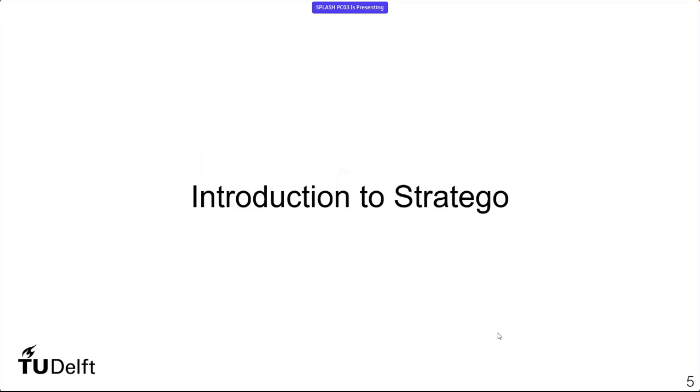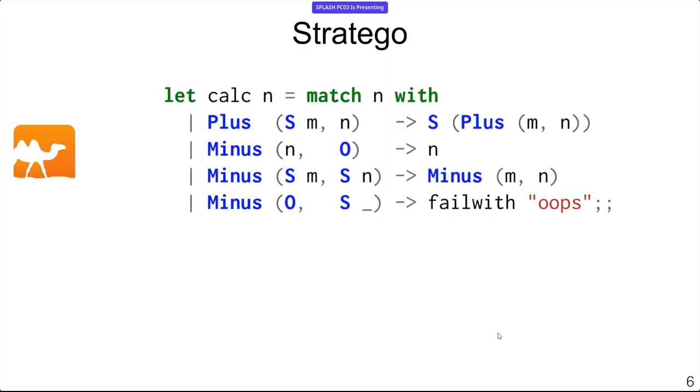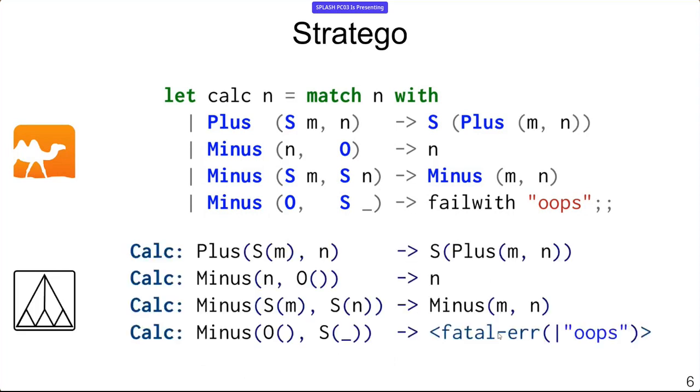So what's so different then about Stratego? In Stratego we have term rewriting. I've explicitly written this in a way that it still looks very similar to OCaml. We have a labeled rewrite rule, and we have multiple of these that basically are the same as the OCaml, except that we don't have an explicit N to match on because term rewriting rules are applied to a term and the term is implicit. But if it was this simple, then of course we would be able to do the same kind of pattern match optimization.